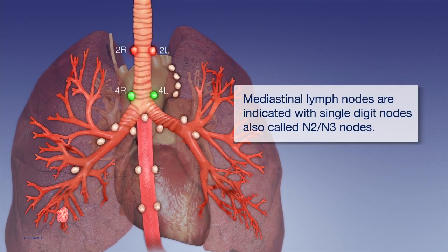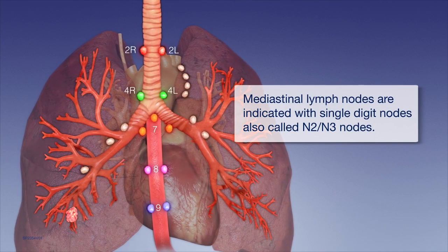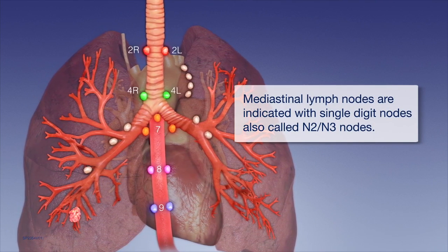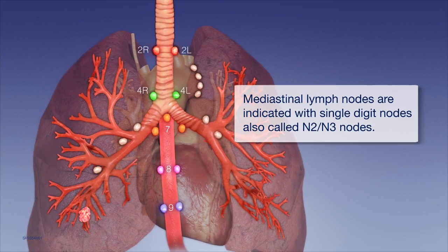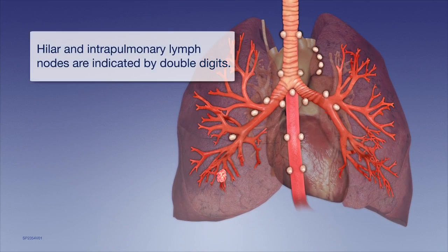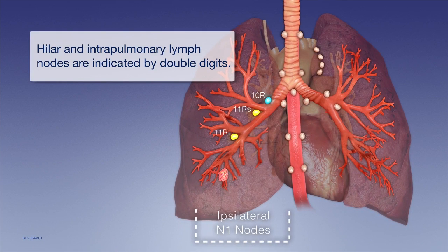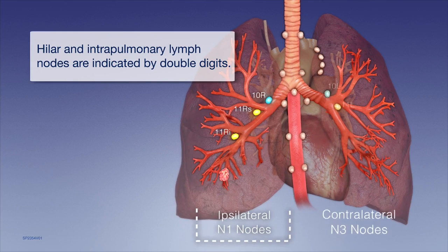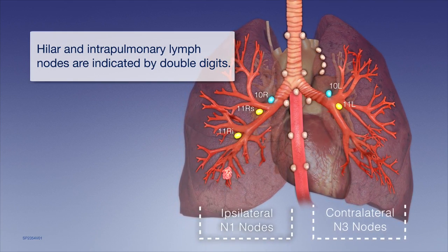Mediastinal lymph nodes are indicated with single digits, also called N2 and N3 nodes. Hilar and intrapulmonary lymph nodes are indicated by double digits. On the ipsilateral side of a lesion they are N1 nodes, and on the contralateral side they are N3 nodes.